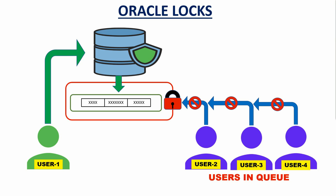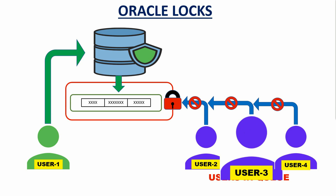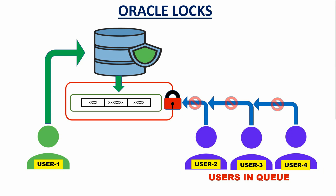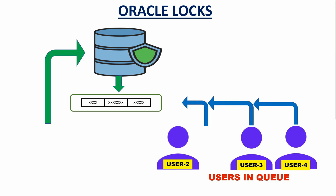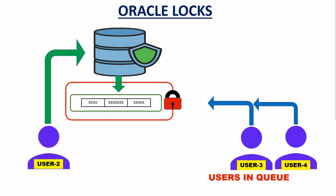Say user 1 wants to modify a row — it will apply a lock first so the other users in the queue cannot modify it until it is done. Until the first user in the queue does not complete the transaction and releases the lock, the next one in the queue will not get permission to apply the lock on the data. Once the first user completes the transaction, it releases the lock and makes the row available for the second user. This is expected behavior, as otherwise it will be chaos of changes in the database and we will end up with inconsistent and useless data.